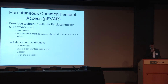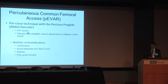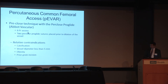Moving into the modern era, we're doing more percutaneous access to the common femoral artery using a pre-close technique with the Perclose ProGlide system by Abbott. The technique places a 6 French sheath, then two pre-close sutures are placed in the artery at right angles prior to dilation. At the end of the procedure, the pre-placed sutures are brought down to close the arteriotomy. Relative contraindications include calcification of the common femoral artery, a vessel diameter less than 5mm, obesity — where the Perclose can't reach the artery — and prior groin incision making it difficult to pass the knot down to the artery.